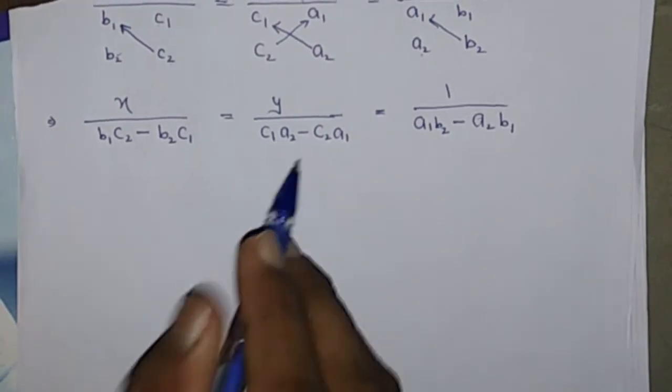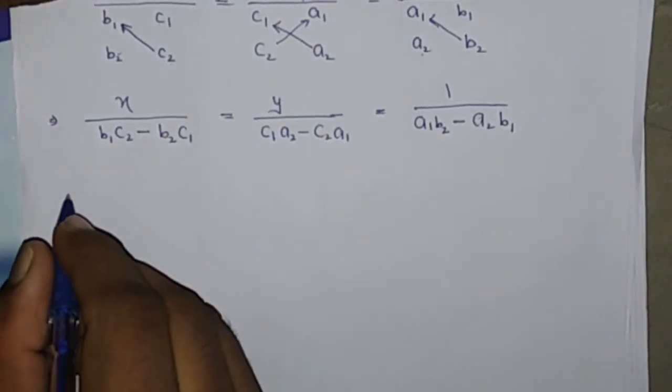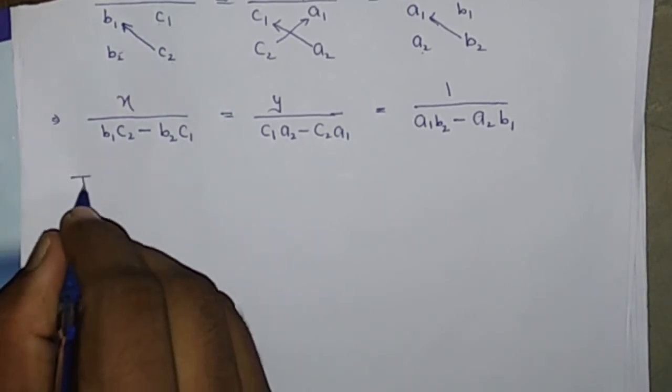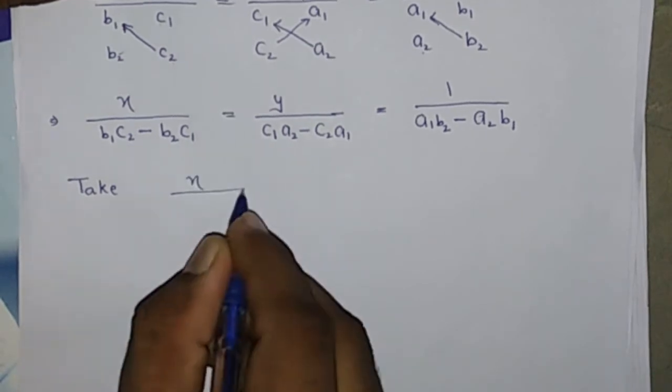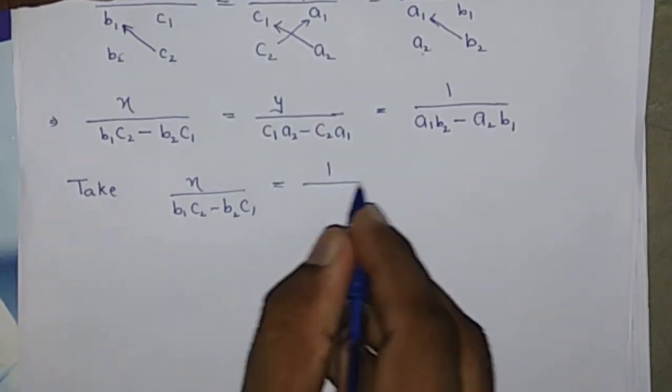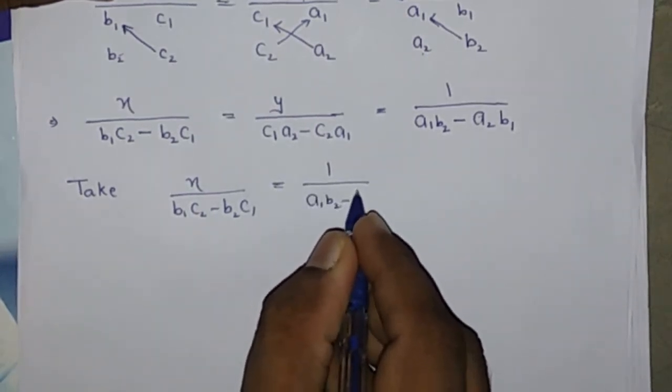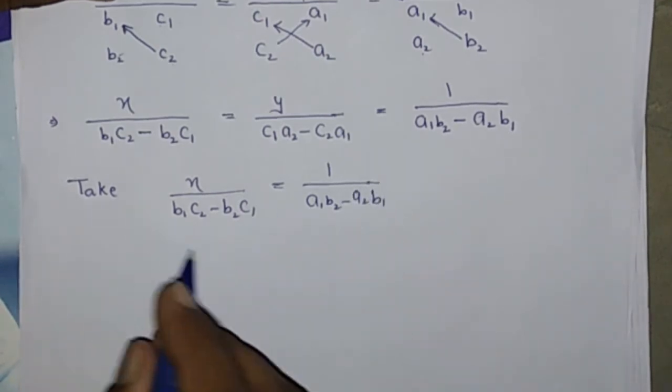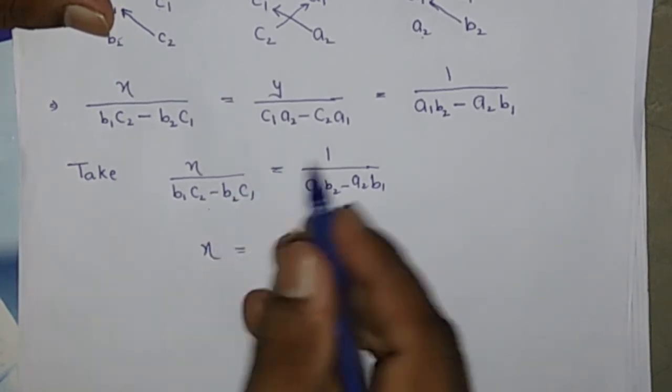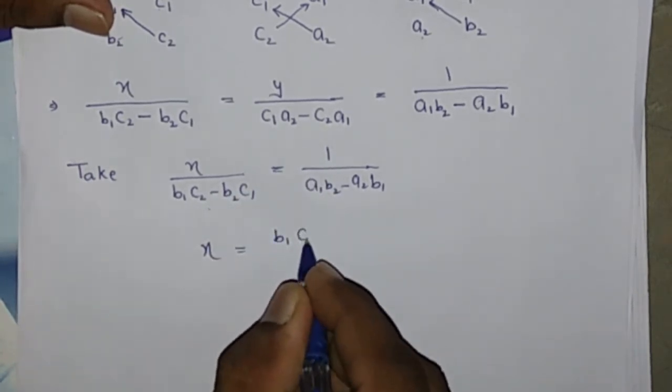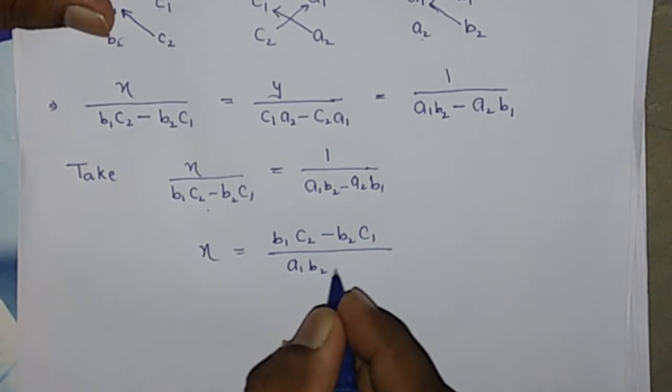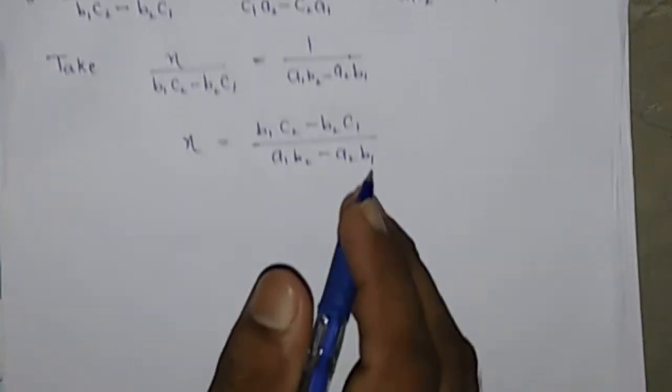Now we compare first term by third term. Then value of x is B1 C2 minus B2 C1 by A1 B2 minus A2 B1. It is the value of x.